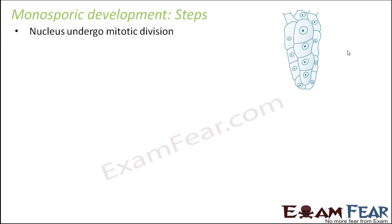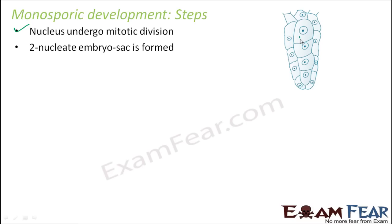First, the nucleus undergoes mitotic division, forming a two-nucleate embryo sac. I am talking about the functional megaspore — because only one megaspore is functional, the other three have already degenerated. This one megaspore has a nucleus, and that nucleus will undergo mitotic division, so two nuclei will be formed.